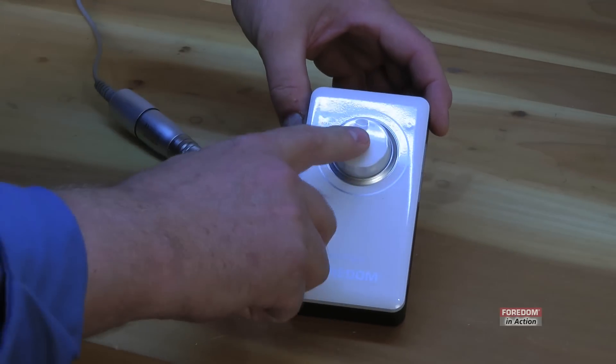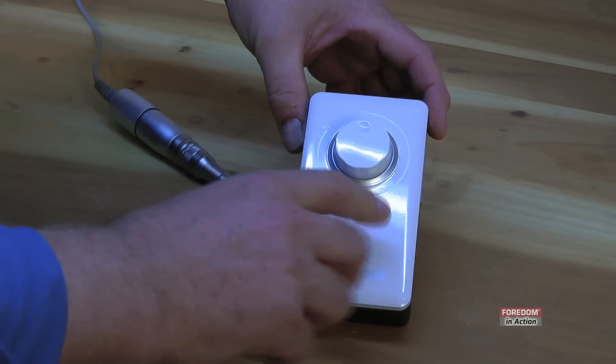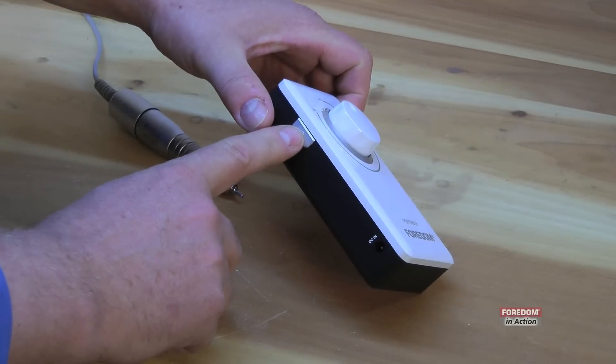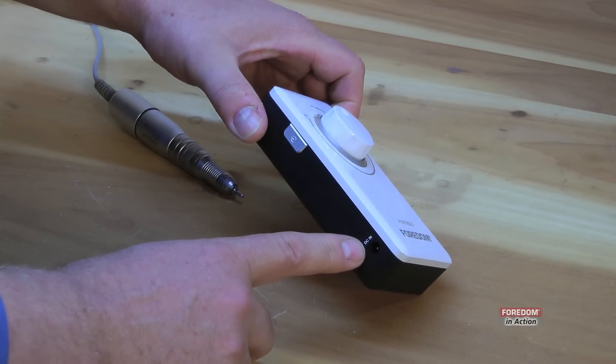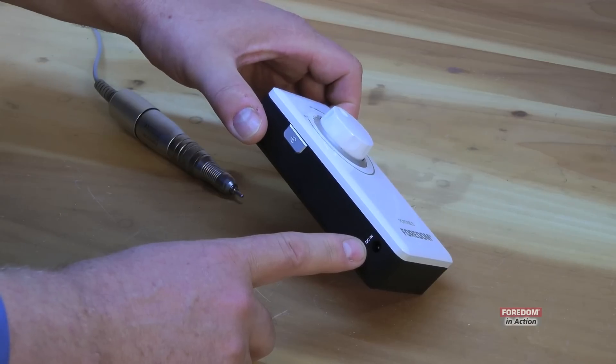This is the control box. As you can see, it's got a dial speed control here. The on button is right here. This is where you would plug in the adapter to plug into the wall, the universal adapter.